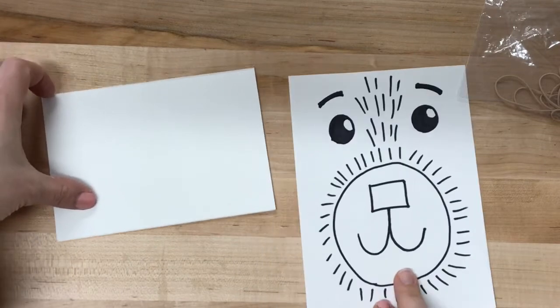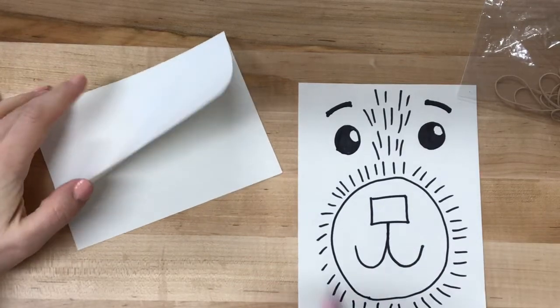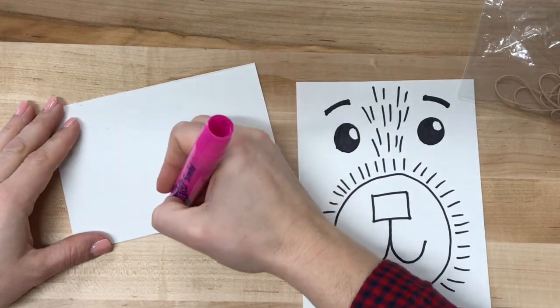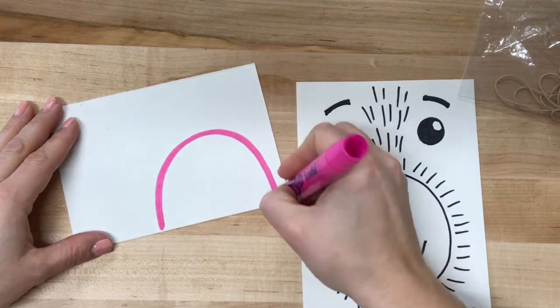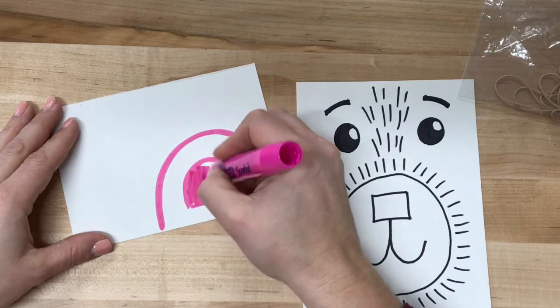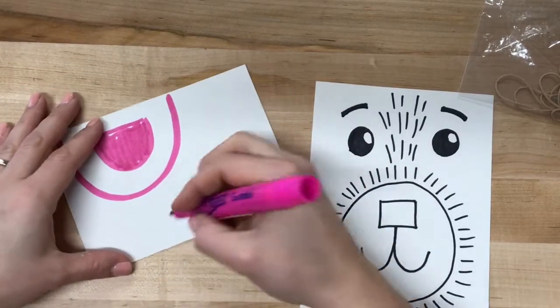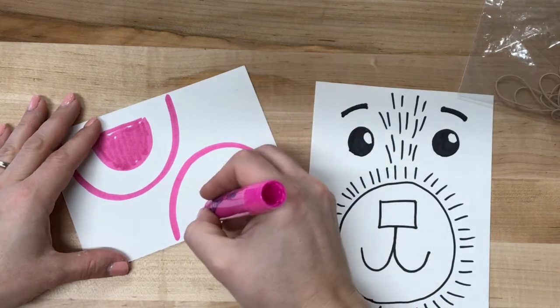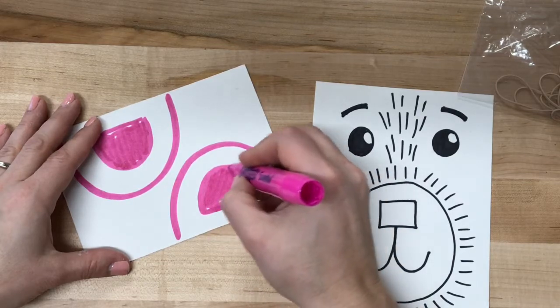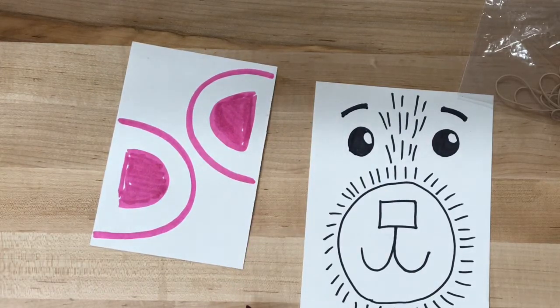Now that we have our face drawn, we're going to work on the ears that we're going to put on our teddy bear. You'll have another sheet of paper and we have already put away our sharpie marker. Basically, all we need for our ears is a half circle and then inside you can draw a half circle as well and color it in. I'm going to need two ears: half circle, half circle, and color it in.